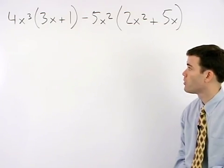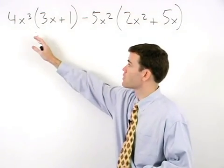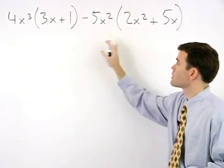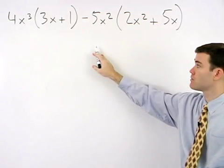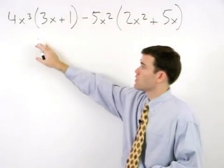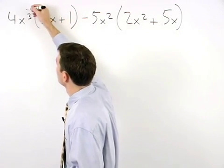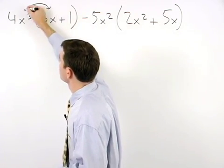Start this problem by distributing the monomials through the binomials inside each set of parentheses. So distributing 4x to the third through 3x plus 1,